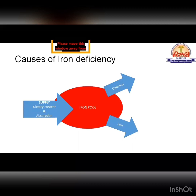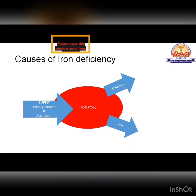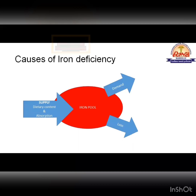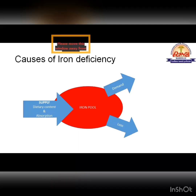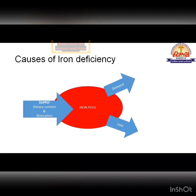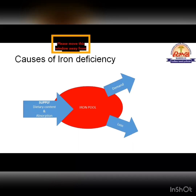Supply has two components: the nutrient may be deficient in the dietary content itself, or it may not be absorbed from the gut. So supply can be hampered at two levels — deficient in food or malabsorption. If body demand increases, there are phases of life such as growth or pregnancy where demand of certain nutrients rises. There are three main headings: decreased supply, increased demand, or increased loss.